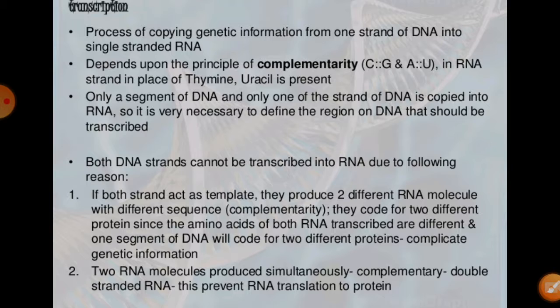Only a segment of DNA is duplicated and one of these strands is copied into RNA — not the whole DNA. Only a segment of DNA is changed into RNA, and both strands of DNA are not copied because of a very special role. We can explain why both strands of DNA are not transferred into RNA, because there are lots of reasons.